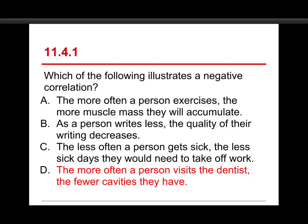A, B, and C are actually all positive correlations. More exercise, more muscle mass. So more of one, more of the other, that's positive. B is phrased a different way. It says less of one, but it also means less of the other. That's a positive correlation.